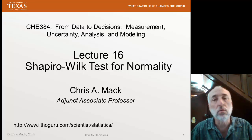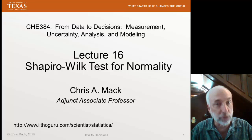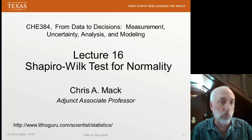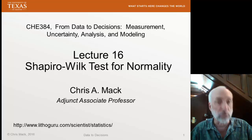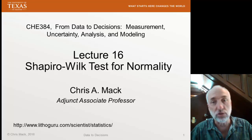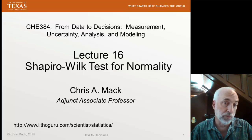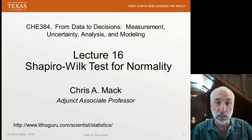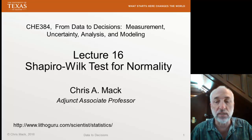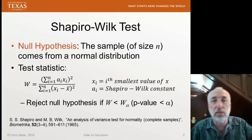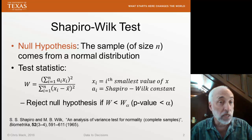Recall that one of the assumptions that we make in our ordinary least squares regression, and assumptions we make for a variety of statistical tests, is that the distribution of the data is normal. So often we want to do some checking to see if we think that's a reasonable assumption to be making. The Shapiro-Wilk test is one of the more popular tests for doing so.